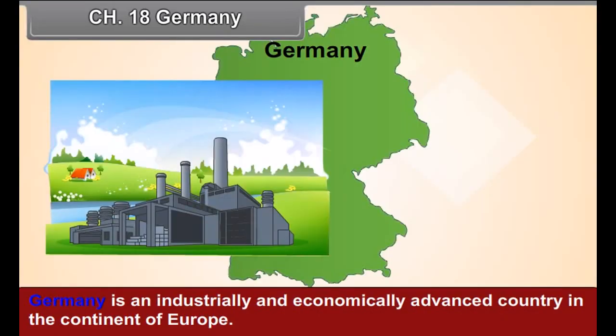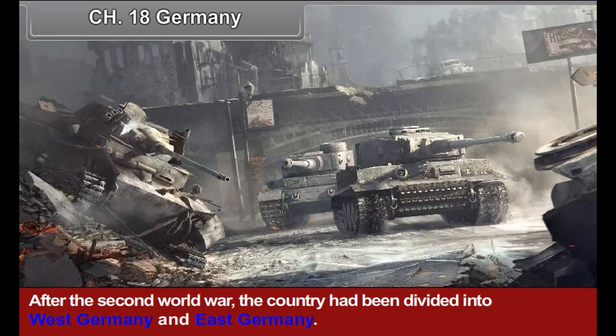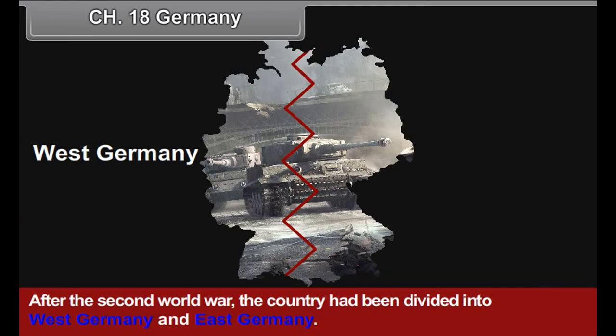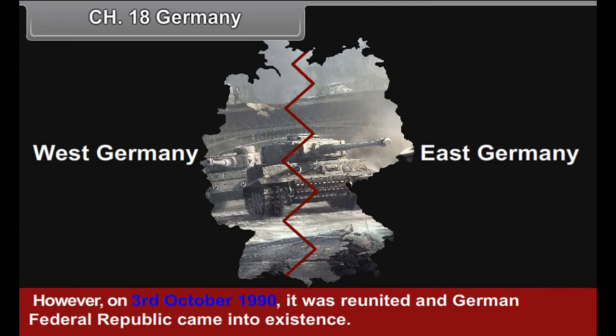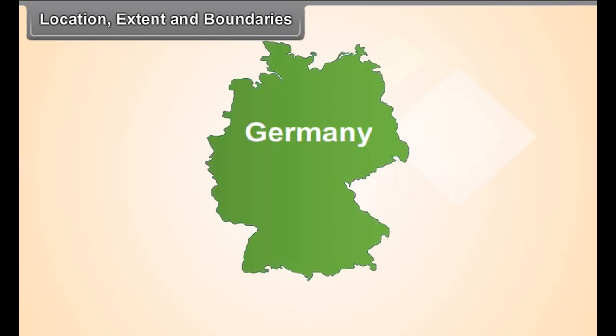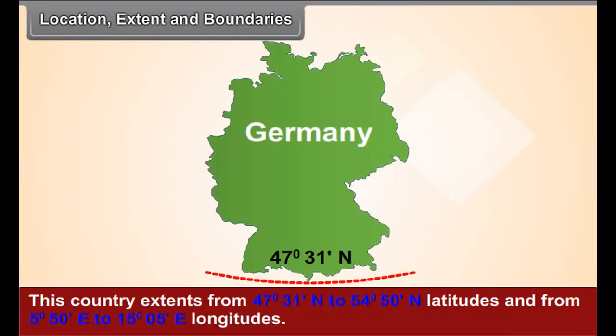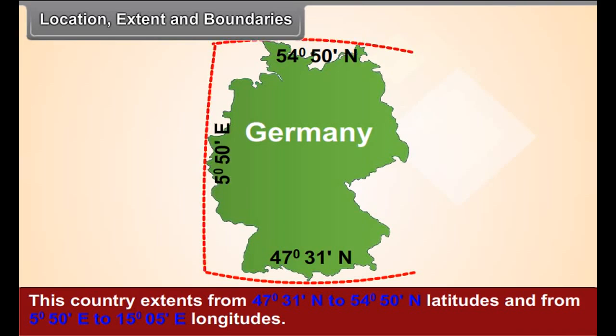Chapter 18 - Germany. Germany is an industrially and economically advanced country in the continent of Europe. After the Second World War, the country had been divided into West Germany and East Germany. However, on 3rd October 1990, it was reunited and the German Federal Republic came into existence. This country extends from 47°31'N to 54°50'N latitude and from 5°50'E to 15°5'E longitude.